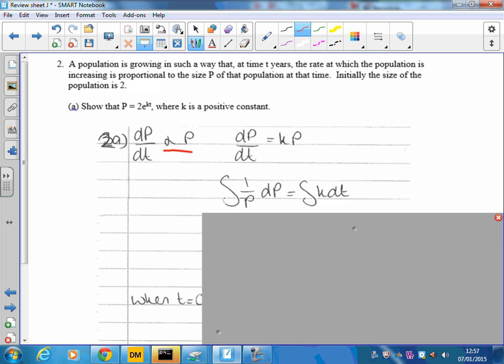Integrating, 1 over P integrates to ln P. And we've got our modular signs there, just in case P's negative. We've also integrating k with respect to t. You've got to be a little bit careful there. k is a constant, so that goes to k times t. And we've got a plus c because we're integrating.